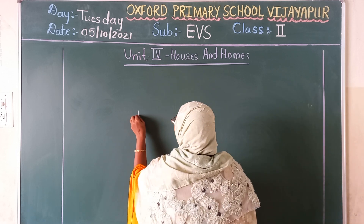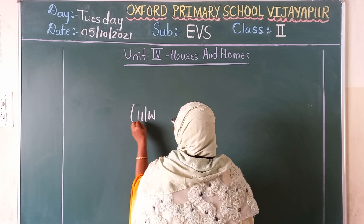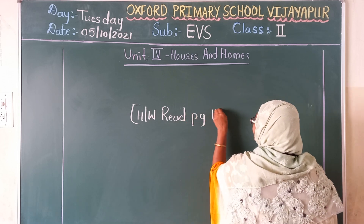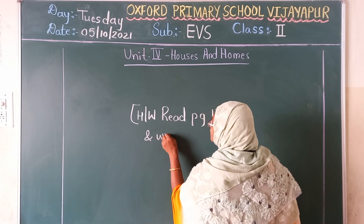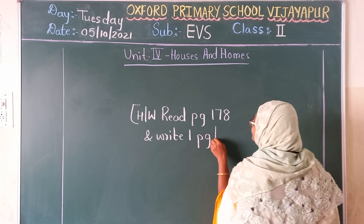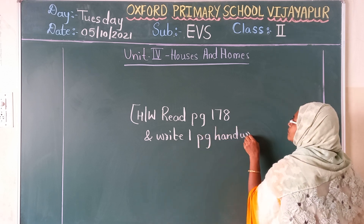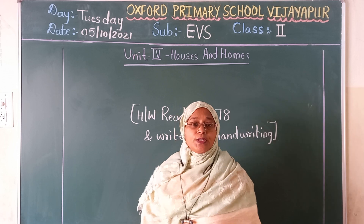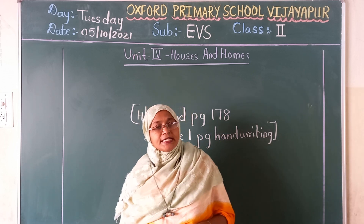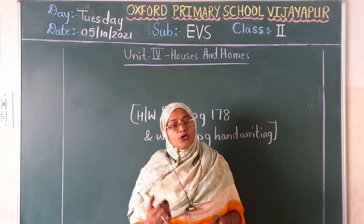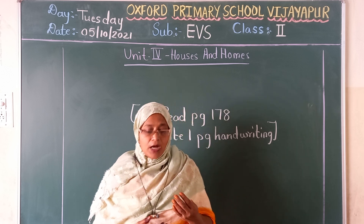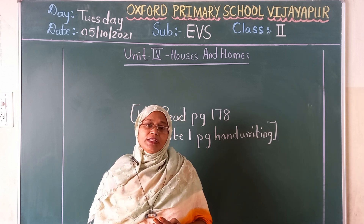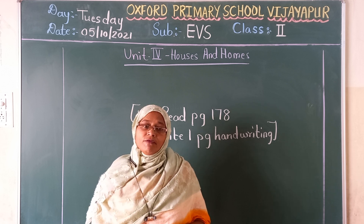So note out your homework first. Your homework is read page number 178. And write one page handwriting. You have to write page number 178 as your handwriting, so that by writing you have to read it and write. Open the textbook page number 178. We will do the reading. After the reading, this class is over, I will send a video clip to you which is related to these types of houses. So open the textbook soon. We will start reading.